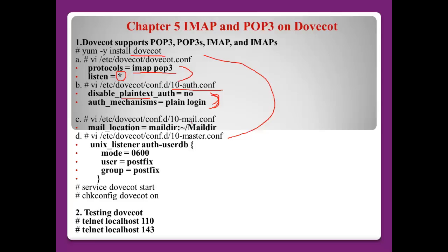Open 10-mail.conf. Here we can define the exact mail directory for each user's home directory. If we send an email, the user's home directory will save the email to this directory. So we have to define the exact directory name.